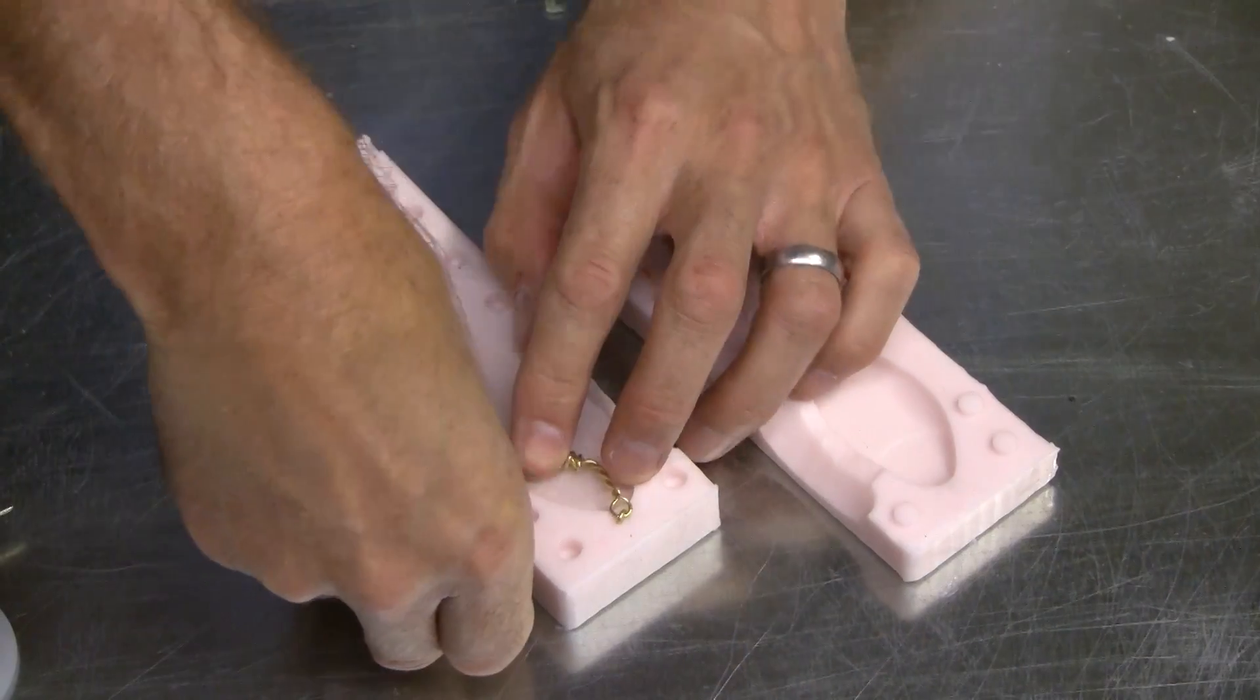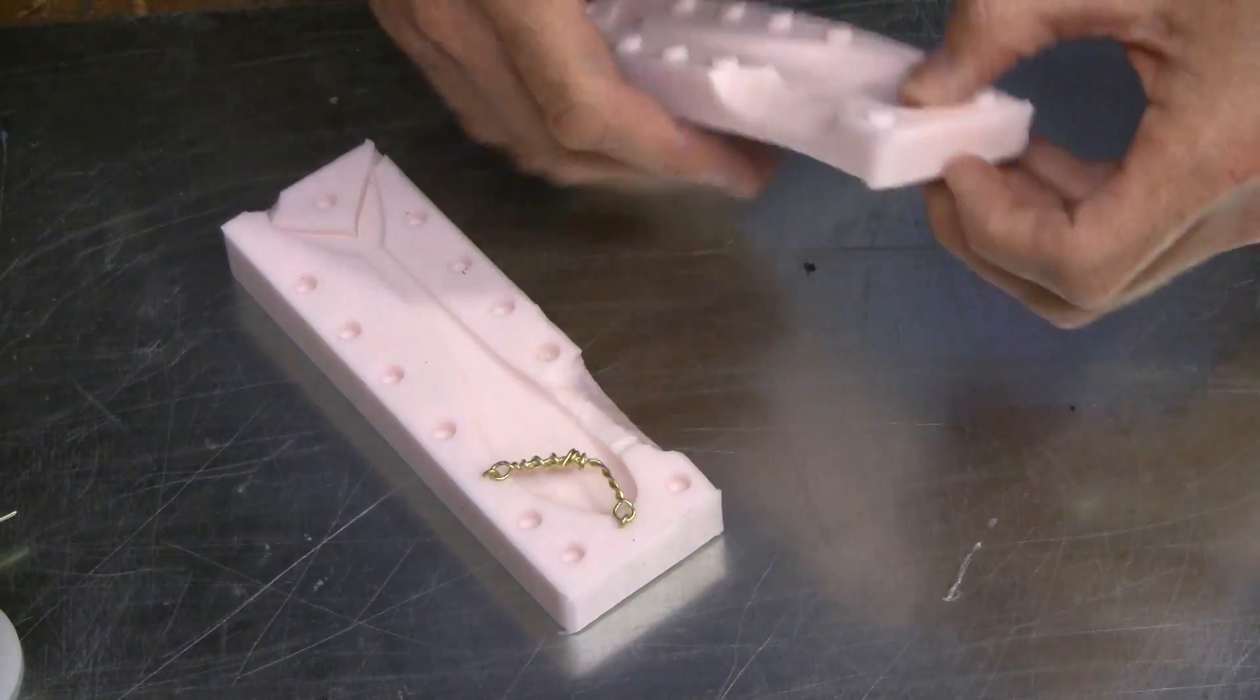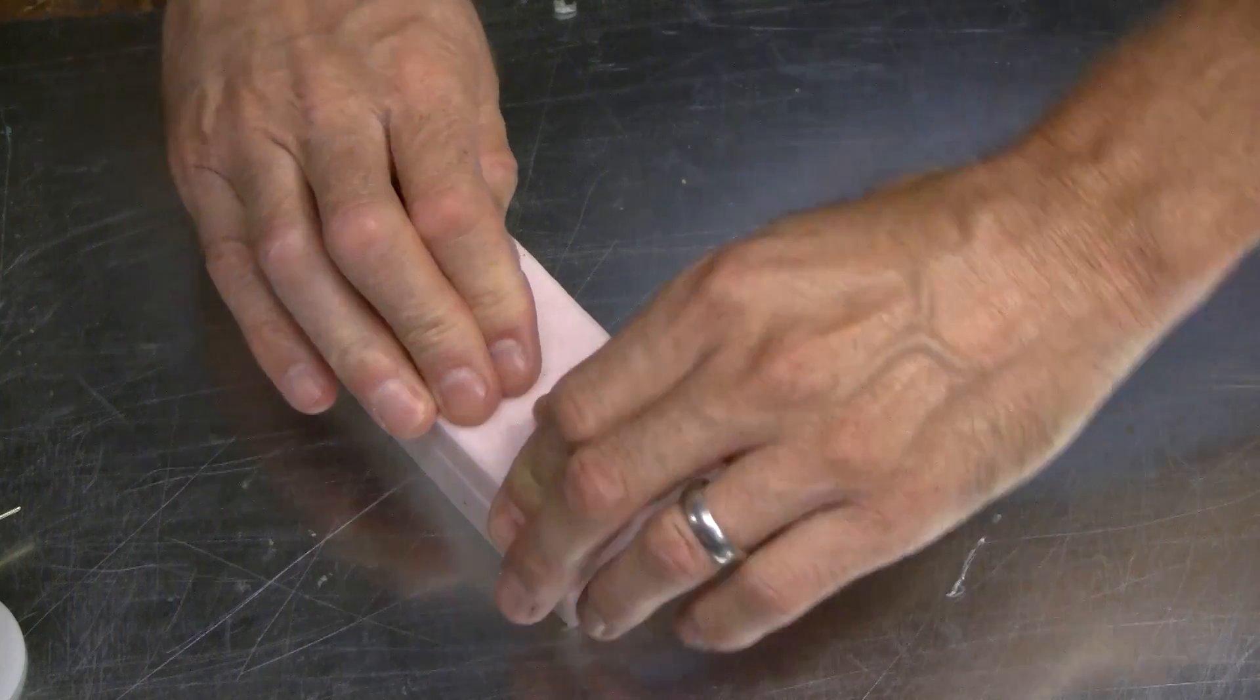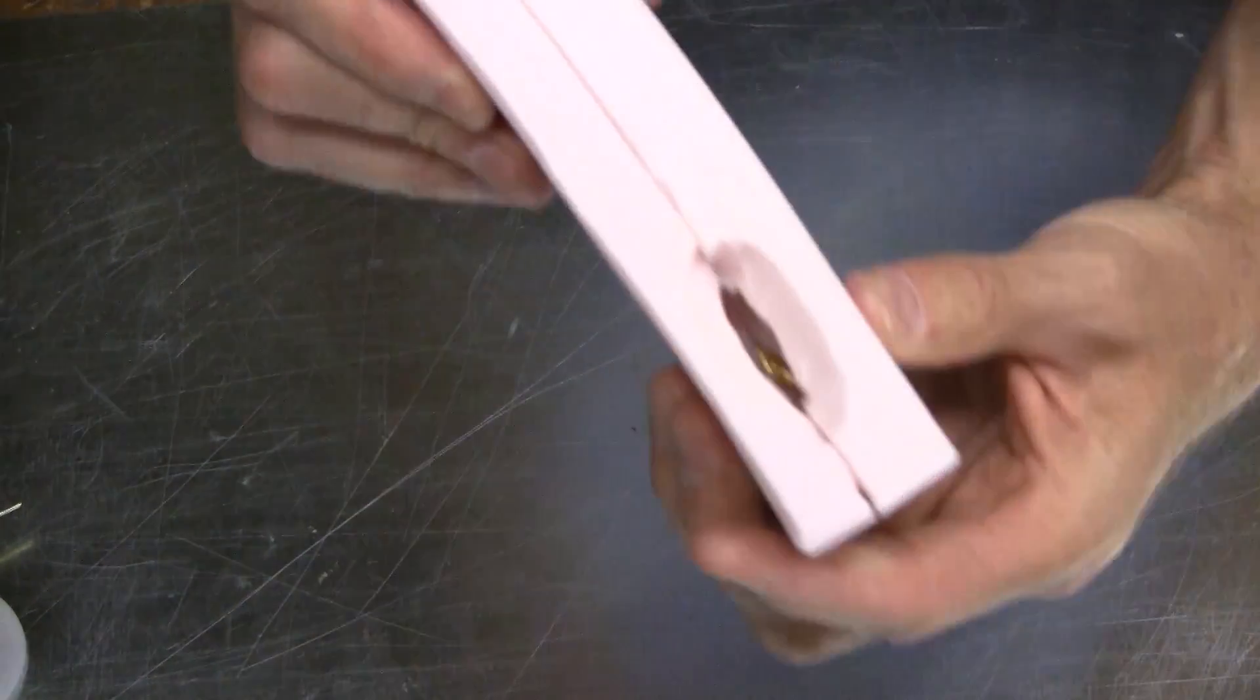Once the rubber is cured, we remove it from the mold boxes, cut our vents and pour hole, bend our wire, and we're ready to pour it.